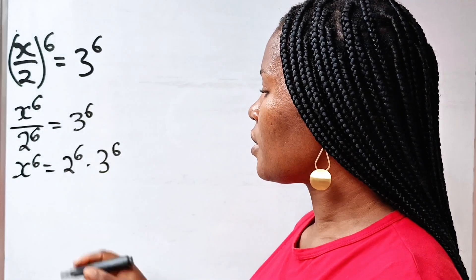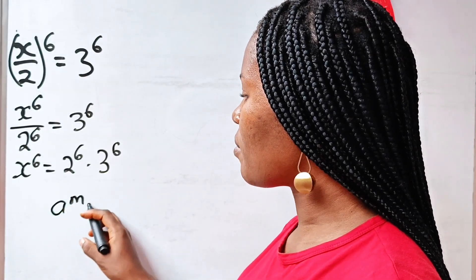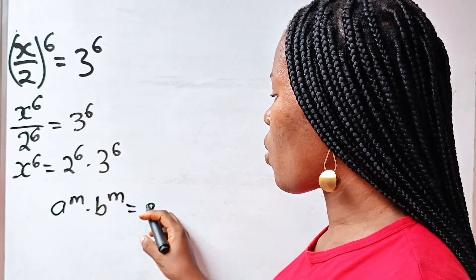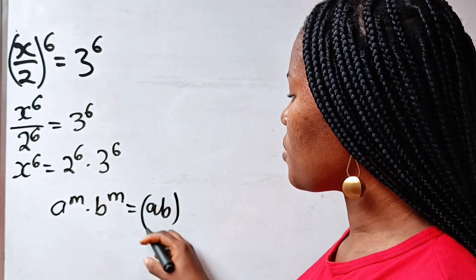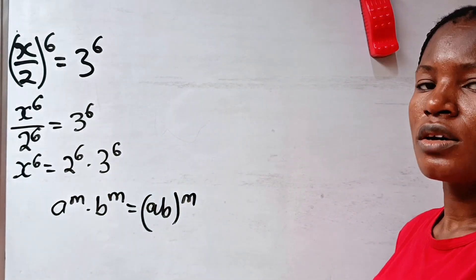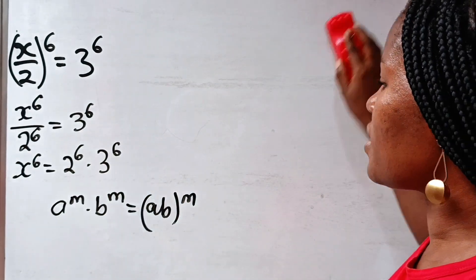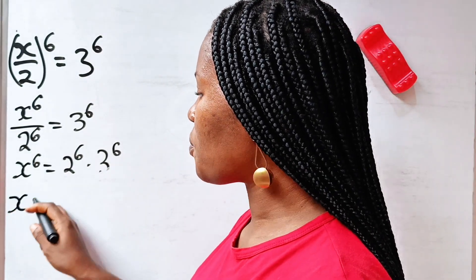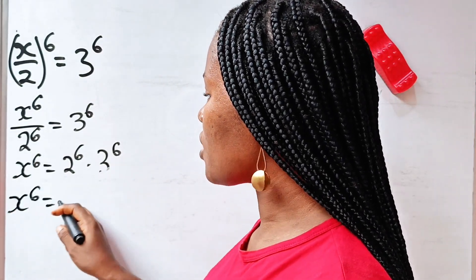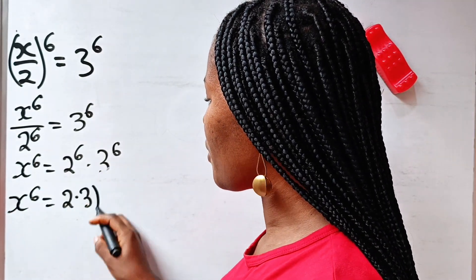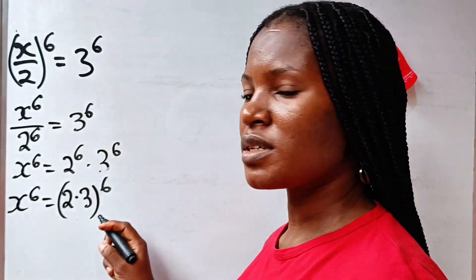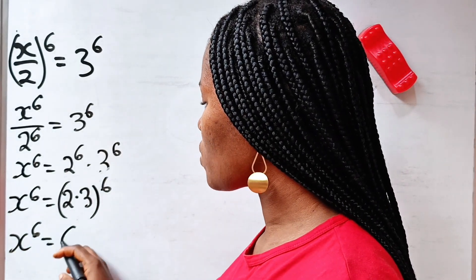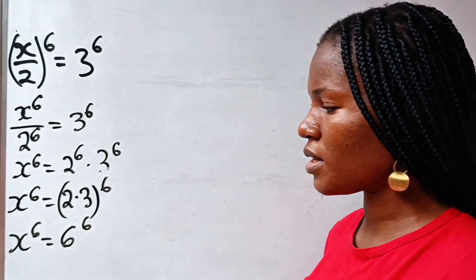Now, remember that a to the power of m multiplied by b to the power of m is equal to ab raised to the power of m. So that simply means that we can write this as x to the power of 6 is equal to 2 multiplied by 3 raised to the power of 6. So x to the power of 6 is equal to 6 to the power of 6.